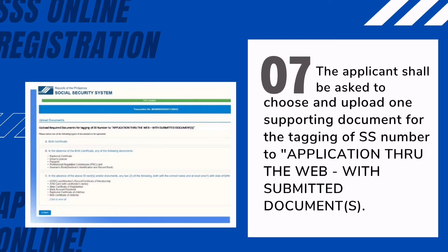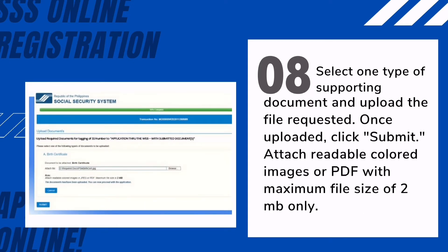Seventh, the applicant will be asked to choose and upload one supporting document for the tagging of the SS number to the application through the web with submitted documents. Eighth, select one type of supporting document and upload the file requested. Once uploaded, click Submit. Attach readable, colored images or PDF files with a maximum file size of 2 MB only.